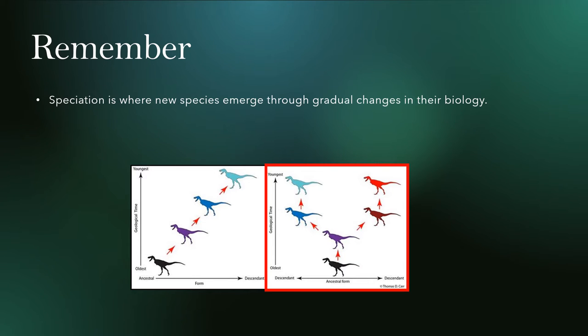There are a couple of types of speciation. One involves gradual changes in a population over time leading to a modern form being genetically different from an ancestral form, to the point where an individual taken back in time would not recognize the other as the same species. The form we'll be looking at today is where multiple species form from a single common ancestor.